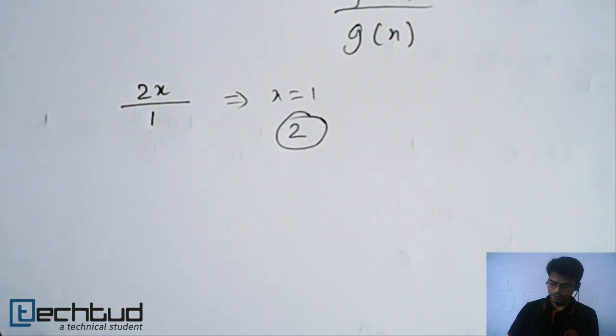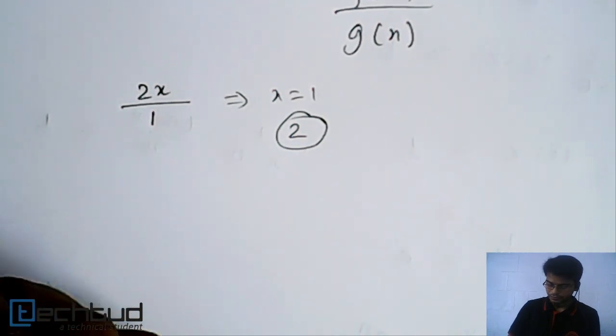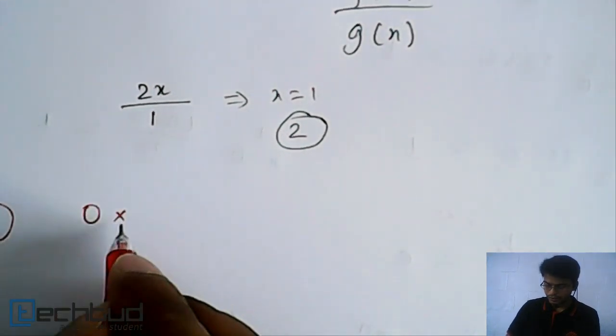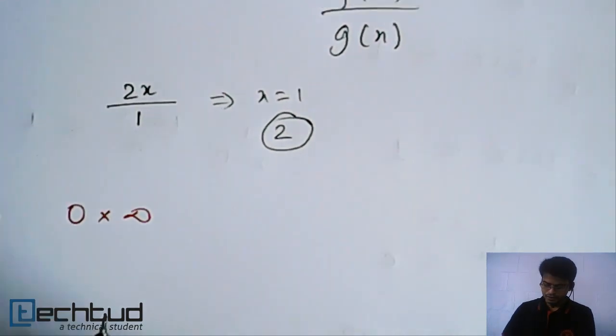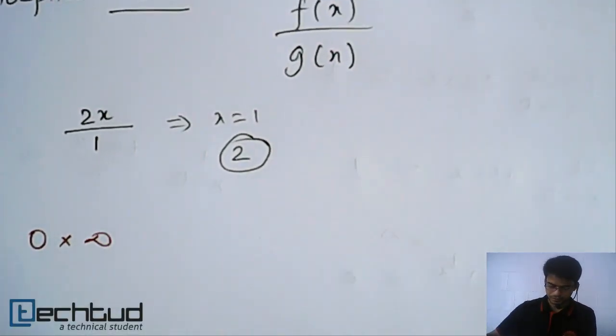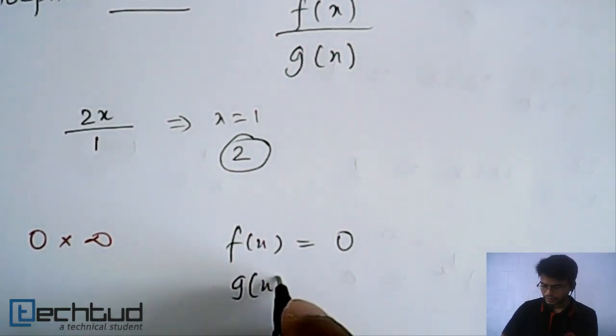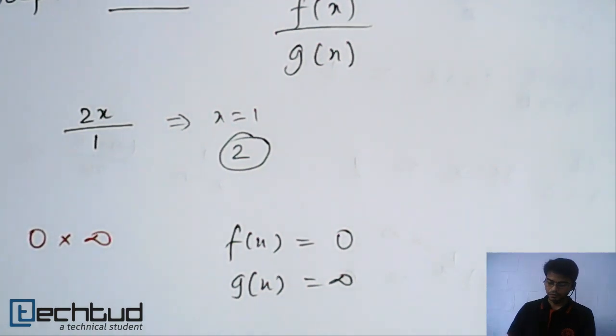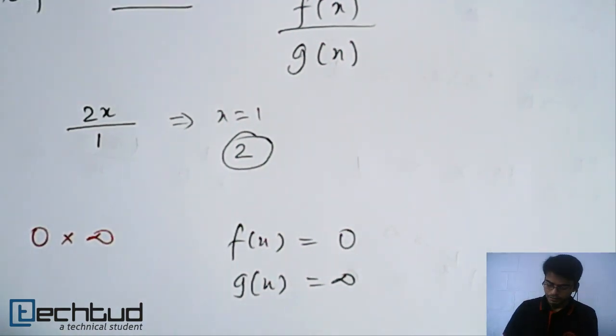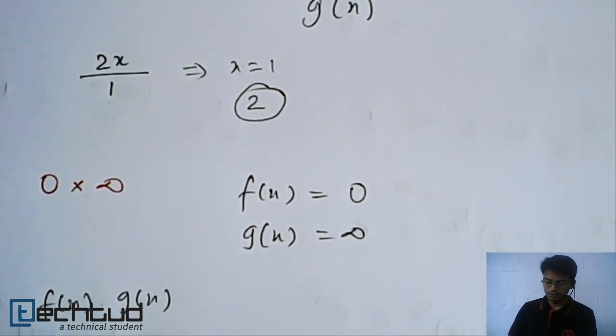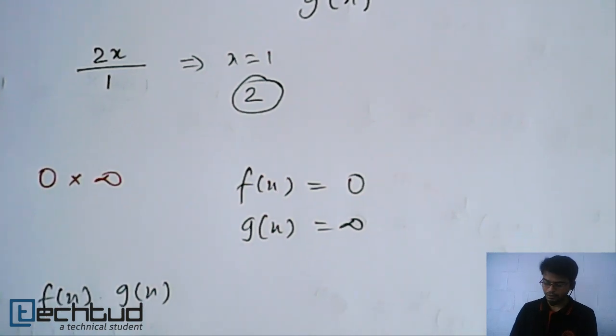Now, next we have a form which is 0 into infinity. So let's say we have f(x) equal to 0 and g(x) equal to infinity. Now, what do we do in this case? That is, we have given to find out the limit of f(x) into g(x).